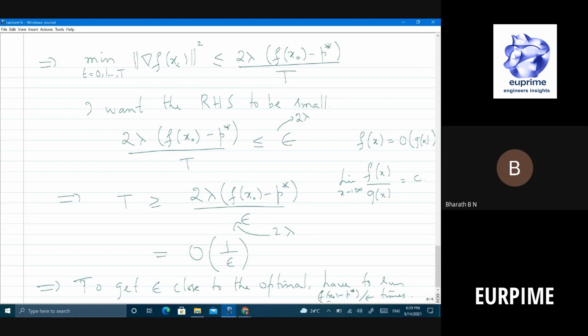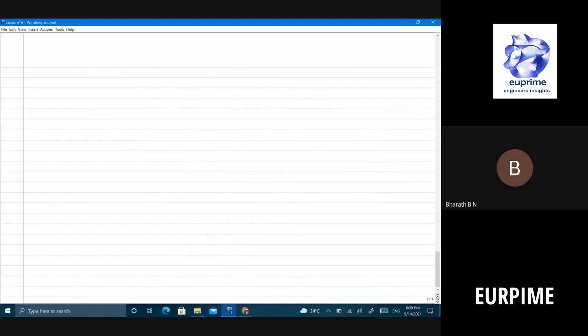This completes the story. That means I am ε close to the optimum if I run order of 1 by ε times. Very clear? I think it is very difficult to remember what is f(x₀) minus p* by ε, so I will simplify. That is why order of notation is very useful. Simple - can get ε close to optimum after order of 1 by ε rounds.